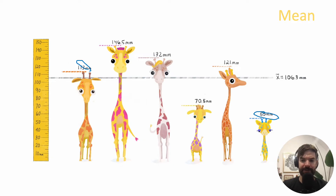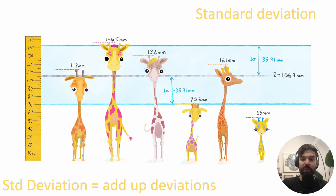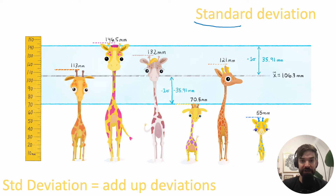How do we come up with a 95% confidence interval? The first thing we want to do is calculate something called the deviation — you take the individual height of the giraffe and subtract it from the average height. Because this one was 55 millimeters and the average was 106, 106 minus 55 gives a deviation of 51. We then calculate a standard deviation by adding up all the deviations and doing some math, and that gives us the ingredient to calculate the 95% confidence interval.